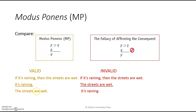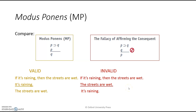Don't confuse a valid modus ponens argument with the fallacy of affirming the consequent. This fallacy starts the same way — if P, then Q — but the second premise isn't P (the antecedent); it's Q (the consequent), and then it tries to conclude 'therefore P.' That doesn't follow. Concrete example: If it's raining, then the streets are wet. But the streets are wet, therefore it's raining — that doesn't follow. The streets might be wet because somebody hosed them down, so it doesn't necessarily follow that it's raining. That is a fallacy.